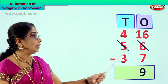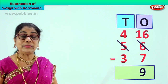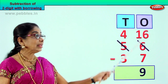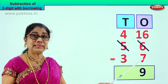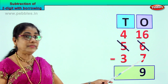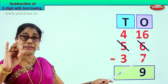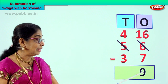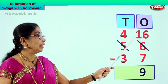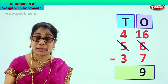Now let us do the subtraction. Now that we have 1 ten plus 6 ones, that is 16, we will take away 7. 16 minus 7 gives you 9. We can check: 7, 8, 9, 10, 11, 12, 13, 14, 15, 16 — that is 9 steps, so 9 plus 7 is 16. We know 16 take away 7 is 9.